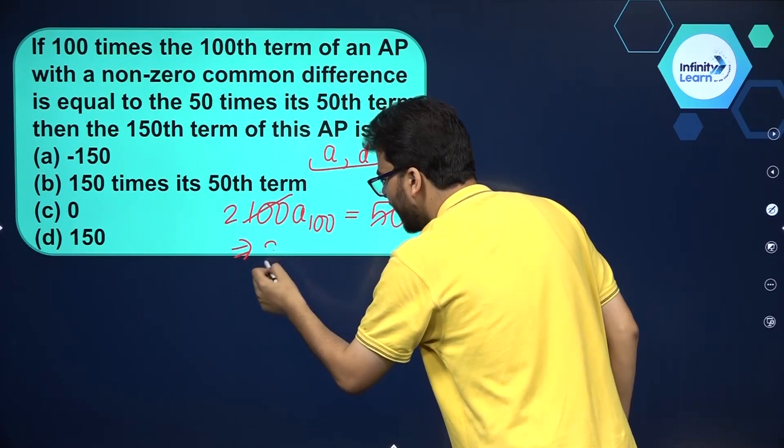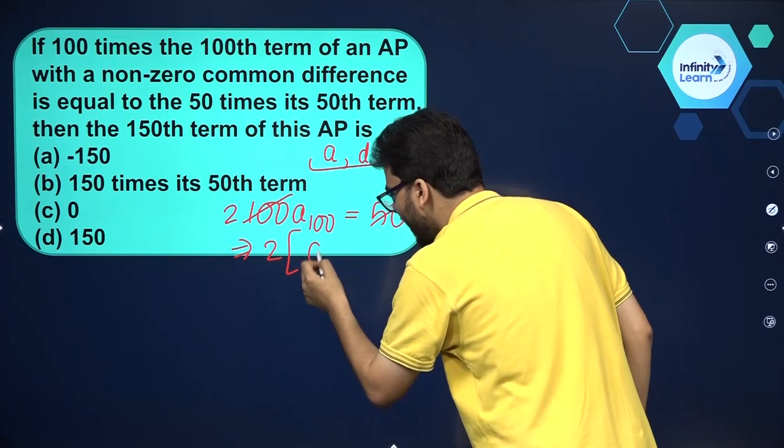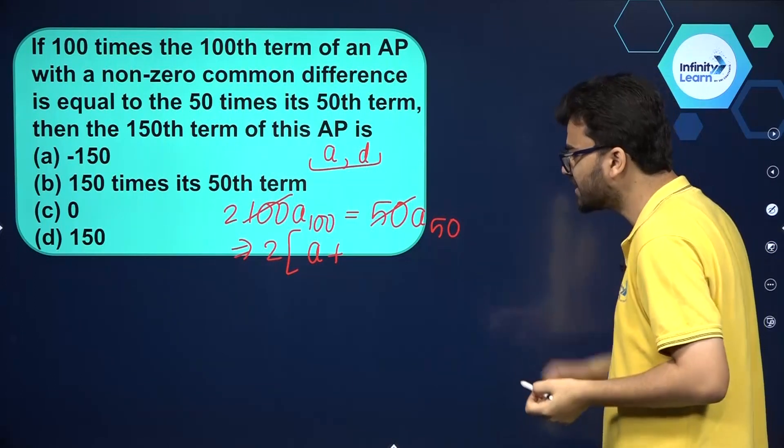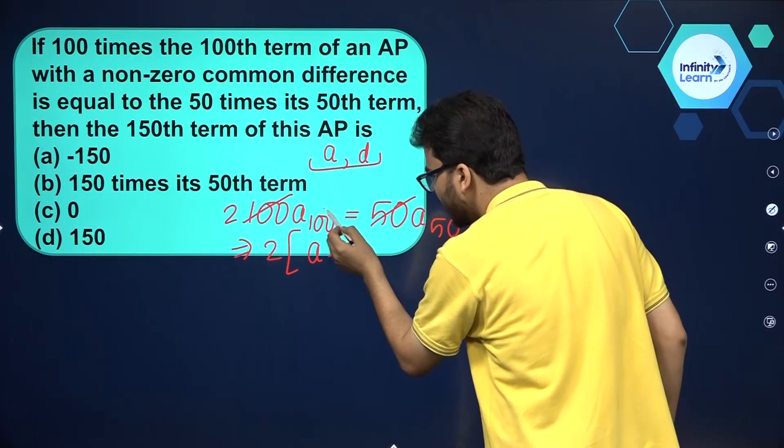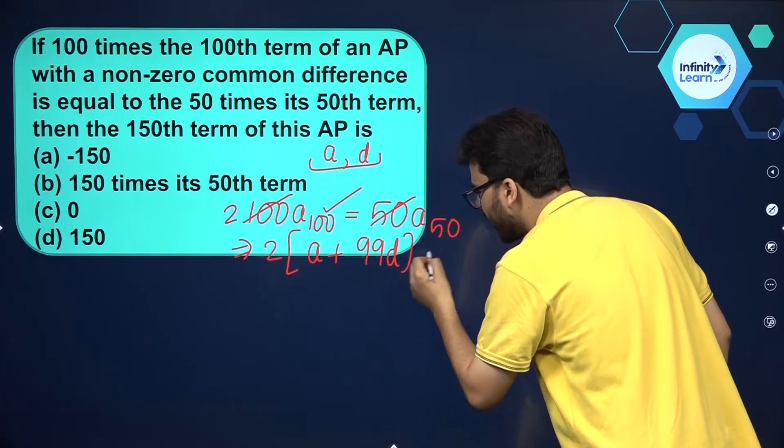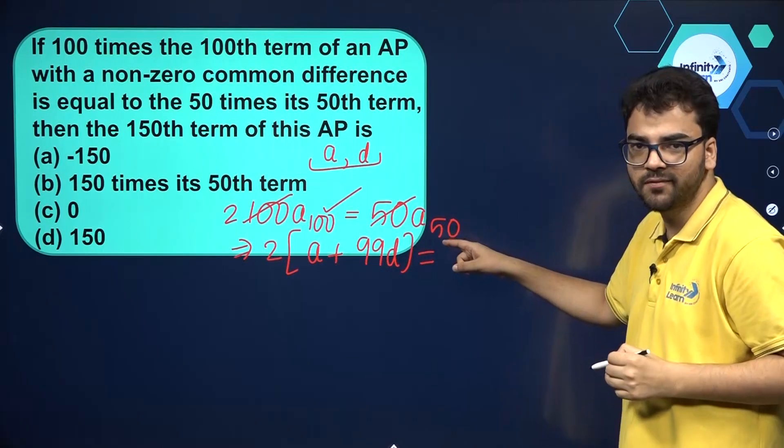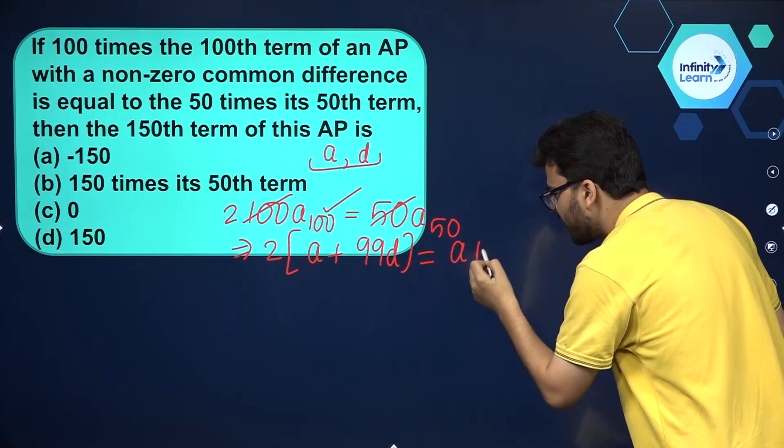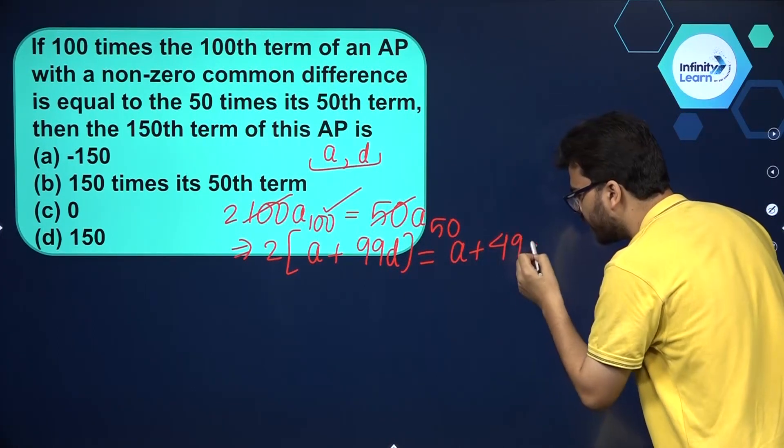What will be the 100th term? It will be A plus N minus 1 into D, that's the nth term of an AP. So A plus 100 minus 1 into D, or A plus 99D. In the same manner, the 50th term will be A plus 50 minus 1 into D, or A plus 49D.